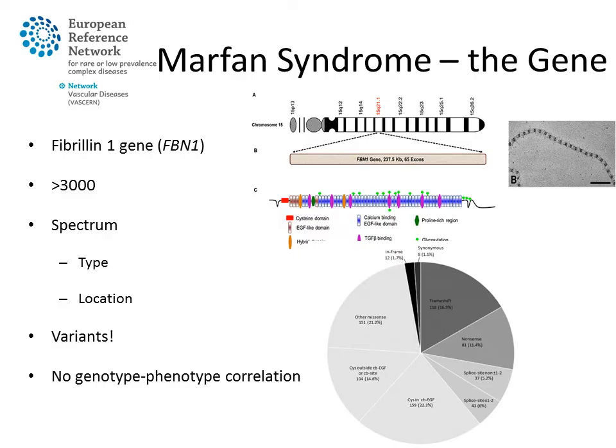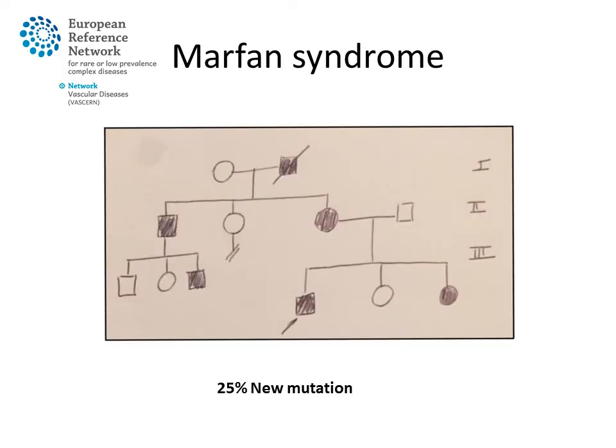It is not possible to predict the severity of disease manifestations based on the underlying gene defect. This is reflected by the wide spectrum of disease severity, even among members of the same family carrying the same mutation. The inheritance of Marfan syndrome is autosomal dominant, meaning that an affected individual will have typically inherited the disease from one of his or her parents and has a 50% chance of transmitting the disease to each child. Men and women are affected equally. It should be noted that up to one-fourth of Marfan patients has a new or spontaneous mutation, meaning that it was not inherited from the parents.